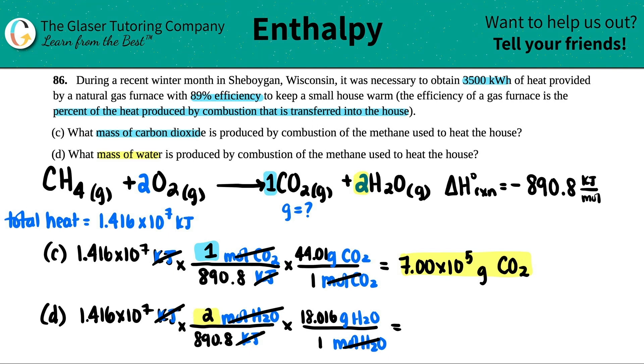1.416 times 10 to the seventh divided by 890.8 times by 18.016. And I get a lot of water molecules, right? I get 5.73 times 10 to the 1, 2, 3, 4, 5. And that's grams of H2O.